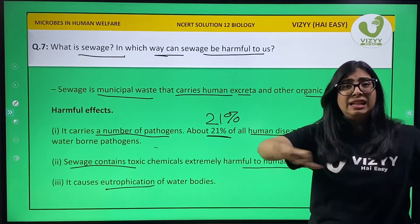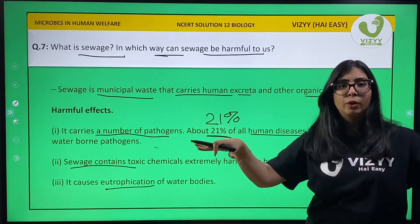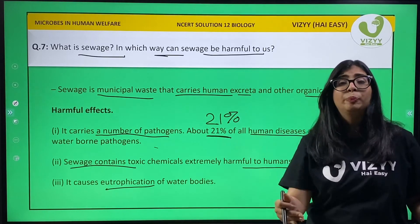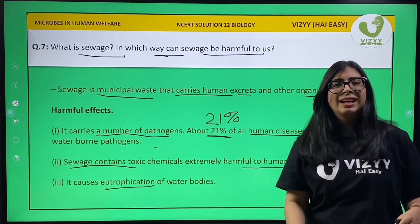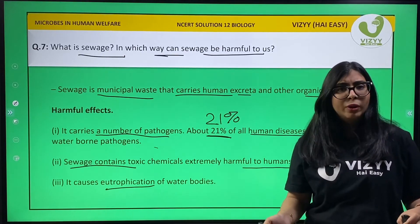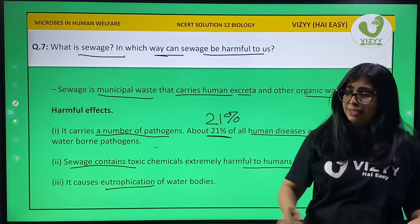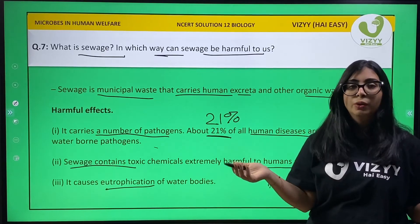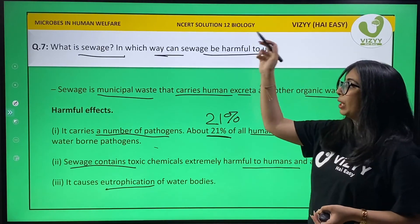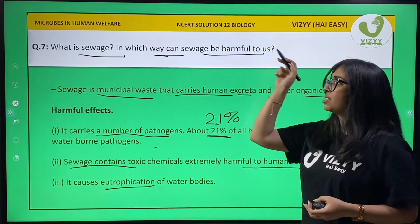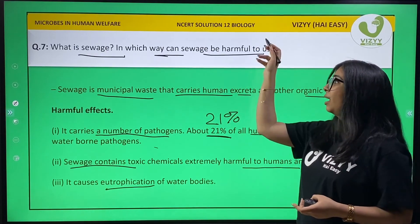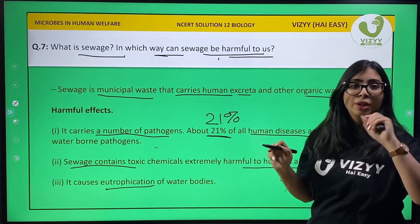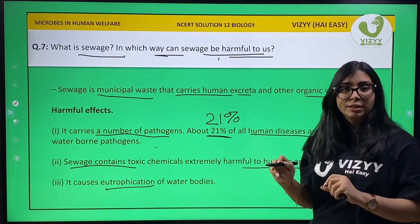Lastly, sewage causes eutrophication of water bodies. Eutrophication means it forms a layer above the water body so sunlight cannot penetrate inside, and thus the water becomes polluted. So we have understood what sewage is and the harmful effects of sewage.